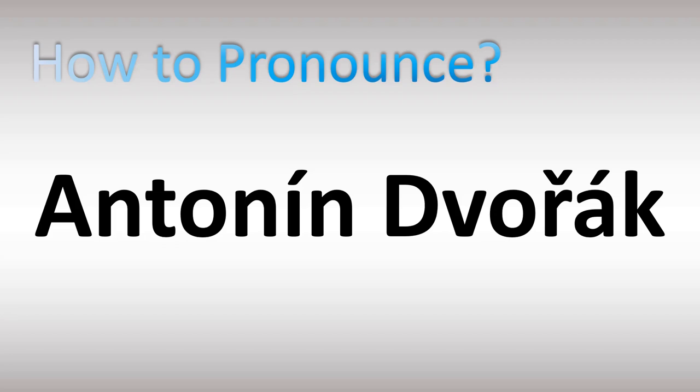How do you pronounce the name of this Czech Austro-Hungarian composer? In Czech it is said as Antonín, Dvořák. So in English it's generally said as Dvořák, with a stress on the V syllable.